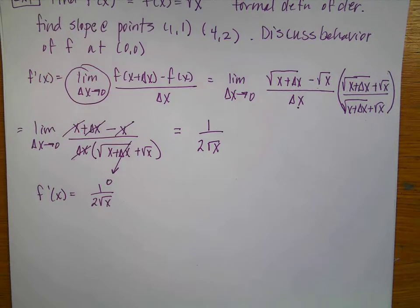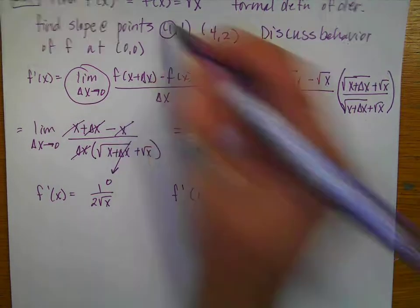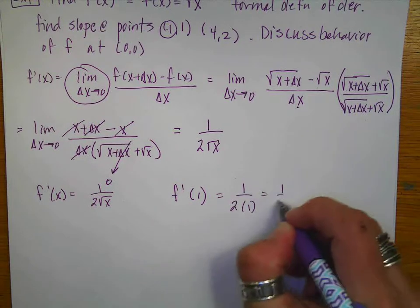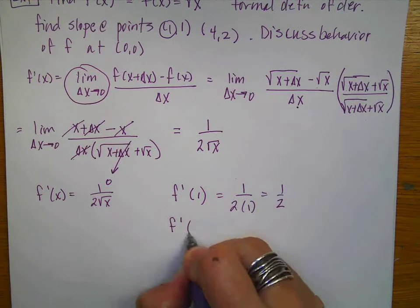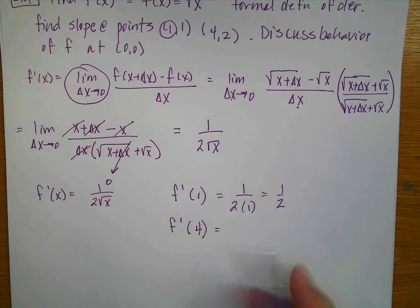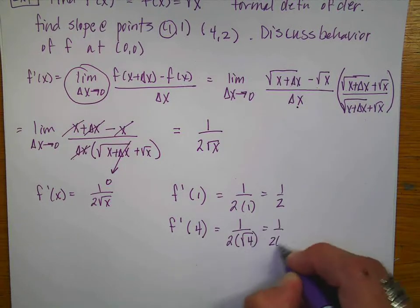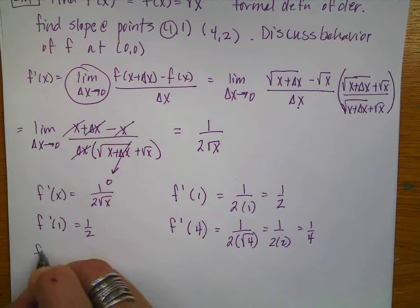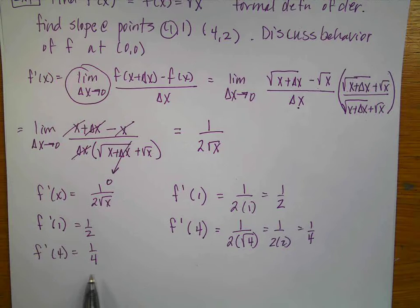Next, find the slope at points (1,1) and (4,2). So f prime of 1 — that's the x value of the first point — equals 1 over 2, since the square root of 1 is 1, so it's just one half. Evaluating the derivative at x equals 4: that's 1 over 2 times the square root of 4, which is 1 over 2 times 2, which is one fourth. So f prime of 1 equals one half and f prime of 4 equals one fourth — the slope is decreasing, becoming more shallow.